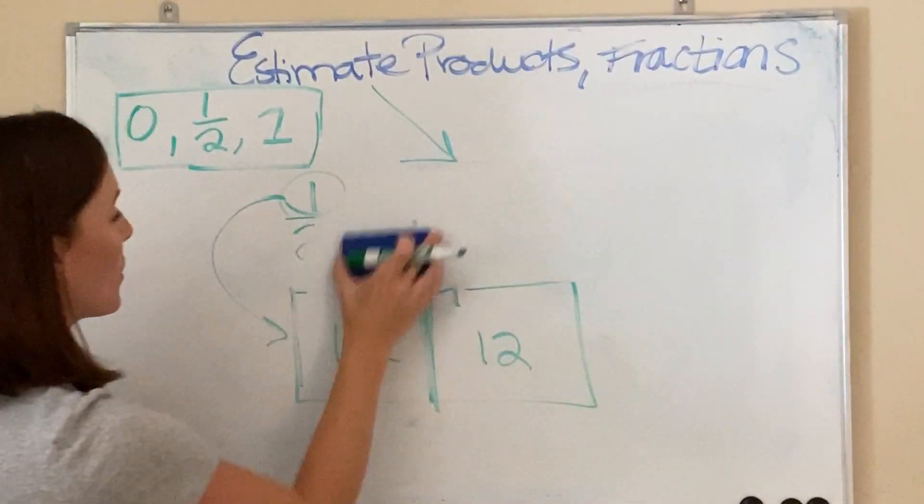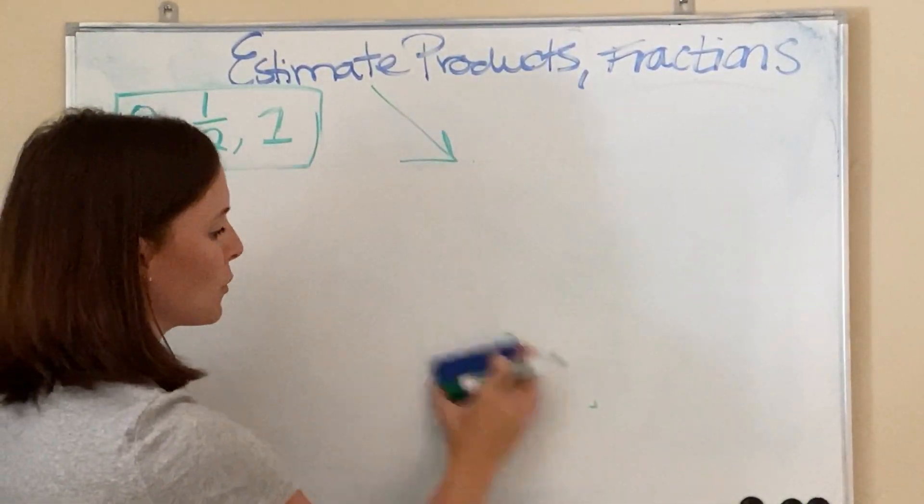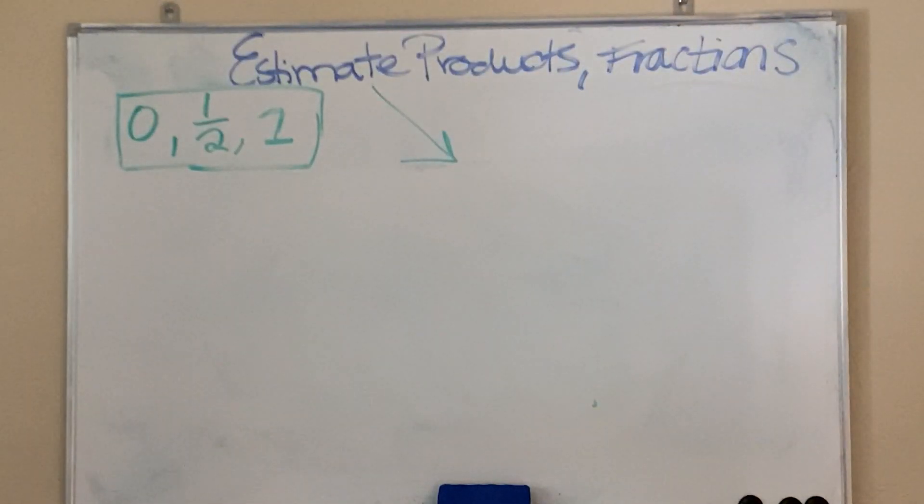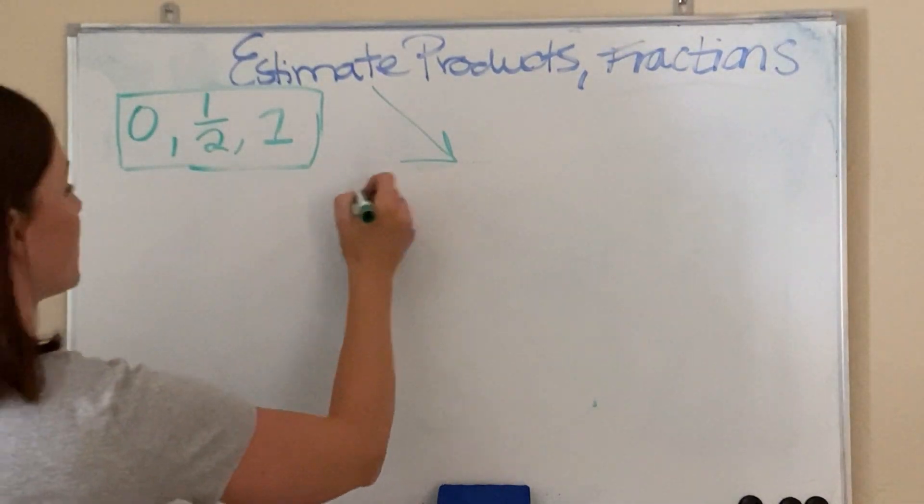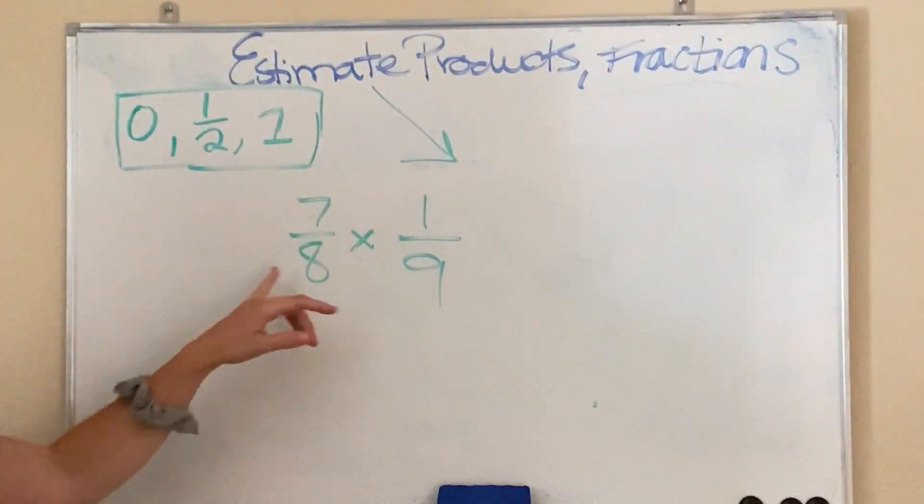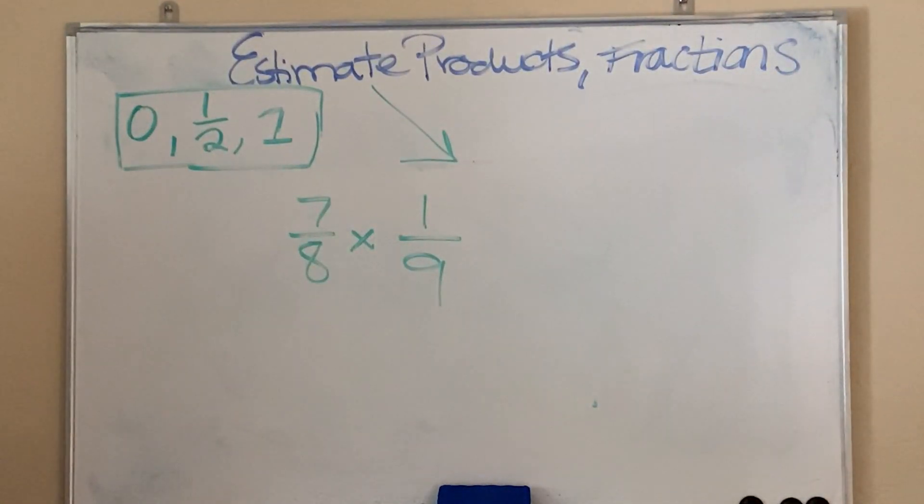Let's go ahead and do another one where we multiply and round both fractions. Let's say we have 7/8 times 1/9. So, in this case, you're going to round both of the fractions to a whole number. It's either going to be 0 or we'll round to a half or to a whole.